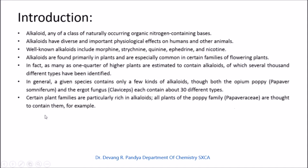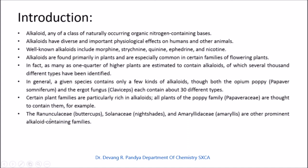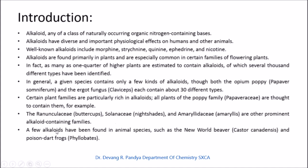Plant families particularly rich in alkaloids include the Papaveraceae (poppy family), Ranunculaceae (buttercups), Solanaceae (nightshades), and Amaryllidaceae. Only a few alkaloids have been found in animal species. The poison dart frog is one example that contains alkaloids in its skin. Ergot and a few other fungi also produce alkaloids.